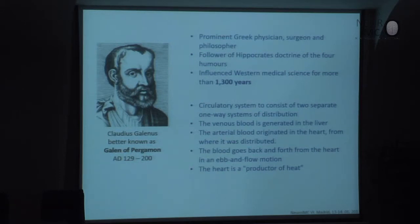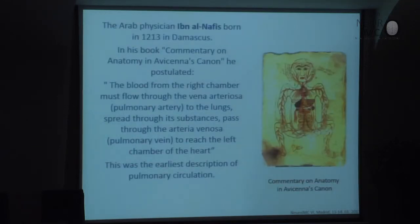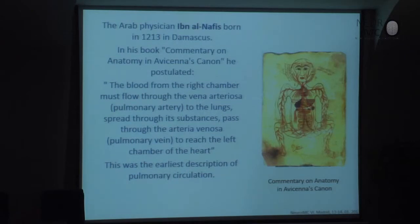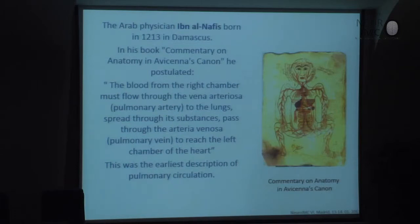This was one of the main challenges that Willis had to overcome. Among the important scientific personalities fighting against this doctrine, we must mention the Arab physician Ibn al-Nafis, born in 1213 in Damascus. In his book Commentary on Anatomy in Avicenna's Canon, he postulated that the blood from the right chamber must follow through the pulmonary artery to the lung, spread through its substance, pass through the pulmonary vein, to reach the left chamber of the heart. This was one of the earliest descriptions of pulmonary circulation.